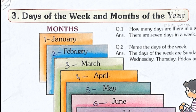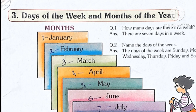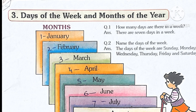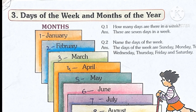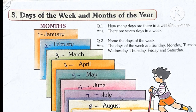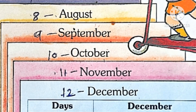January, February, March, April, May, June, July, August, September, October, November and December.